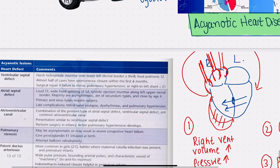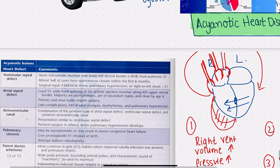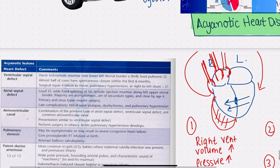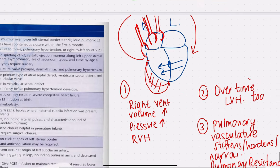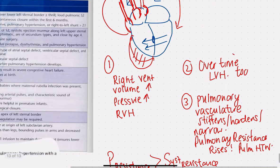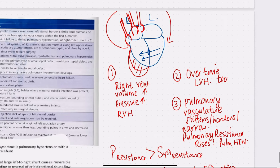Almost half of all VSD cases spontaneously close within six months. Surgical repair is indicated when there is failure to thrive, pulmonary hypertension, or a right-to-left shunt. This is how a VSD can evolve.